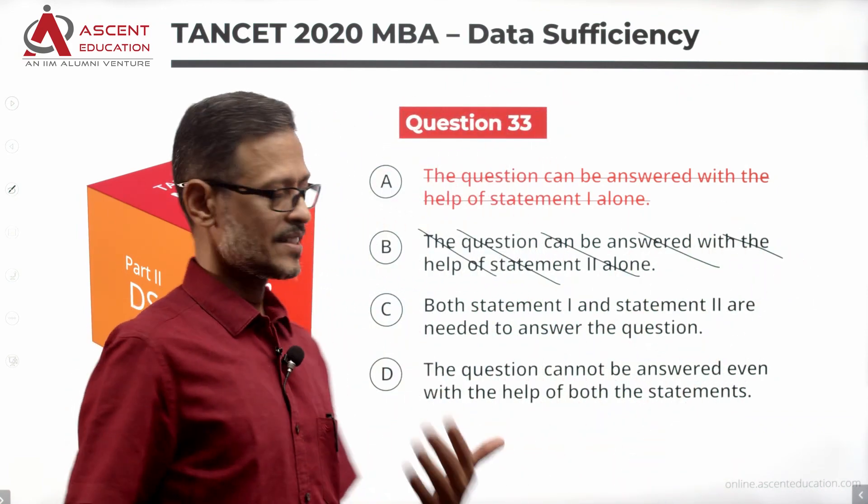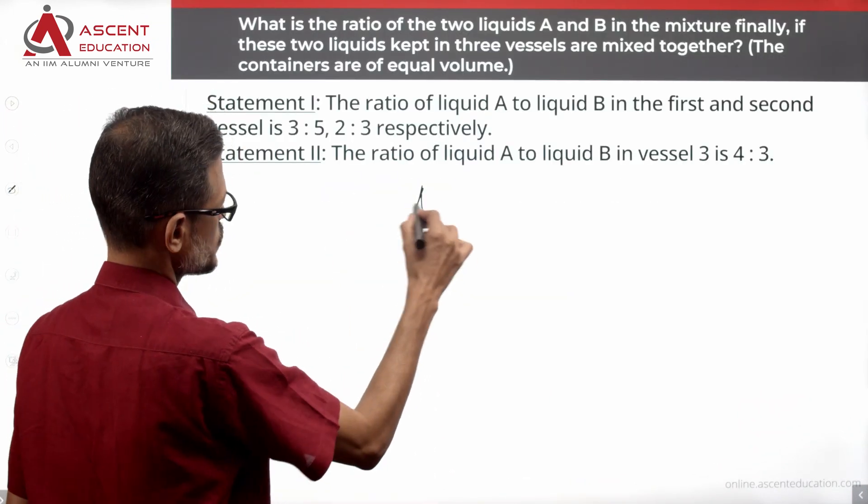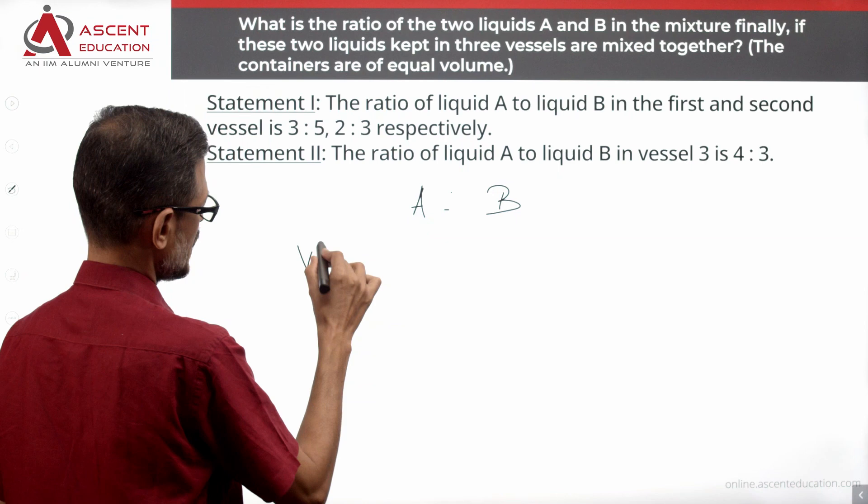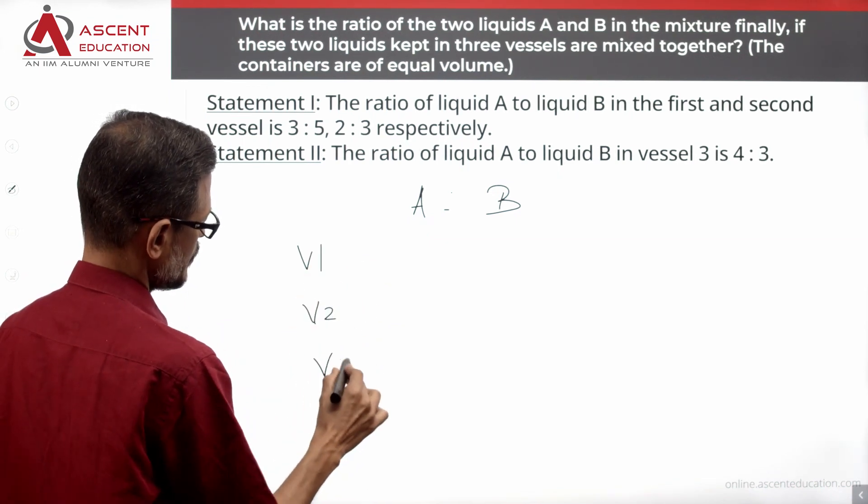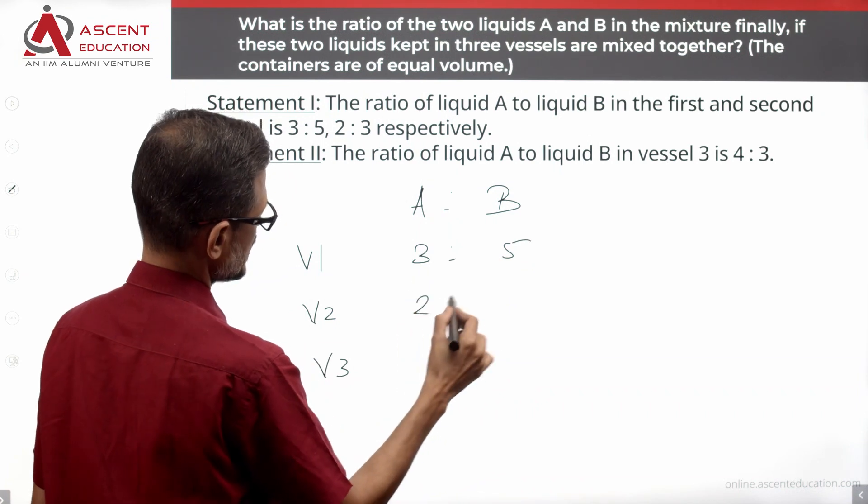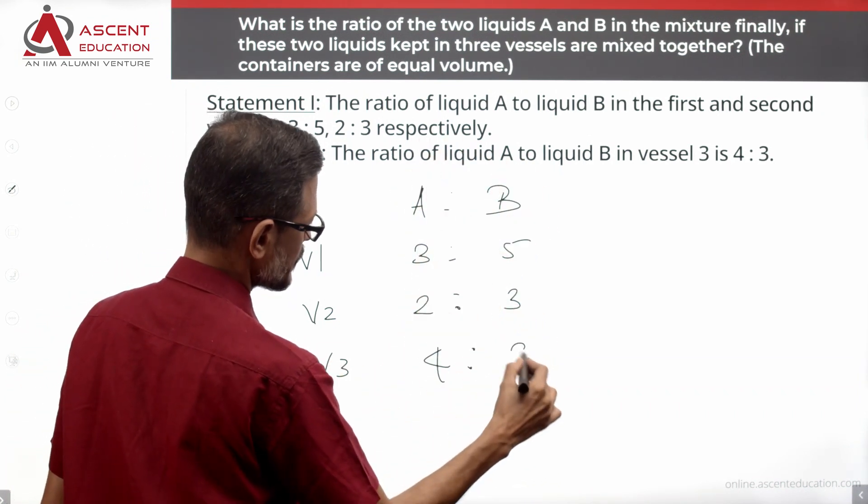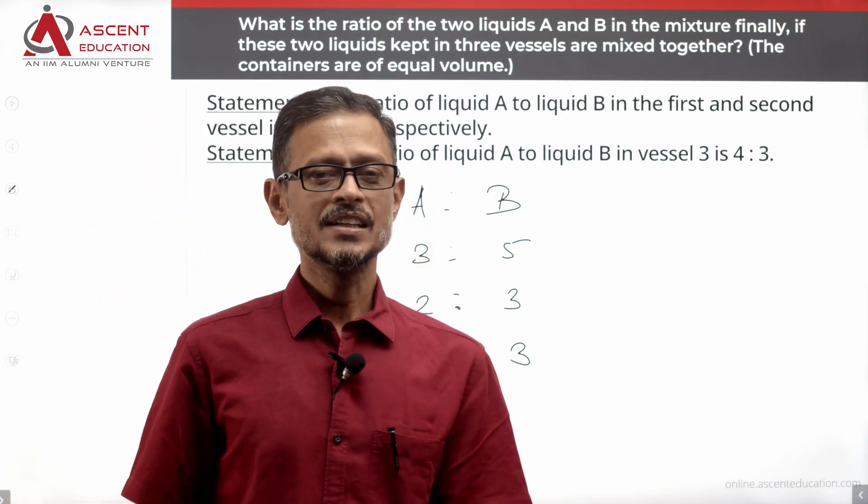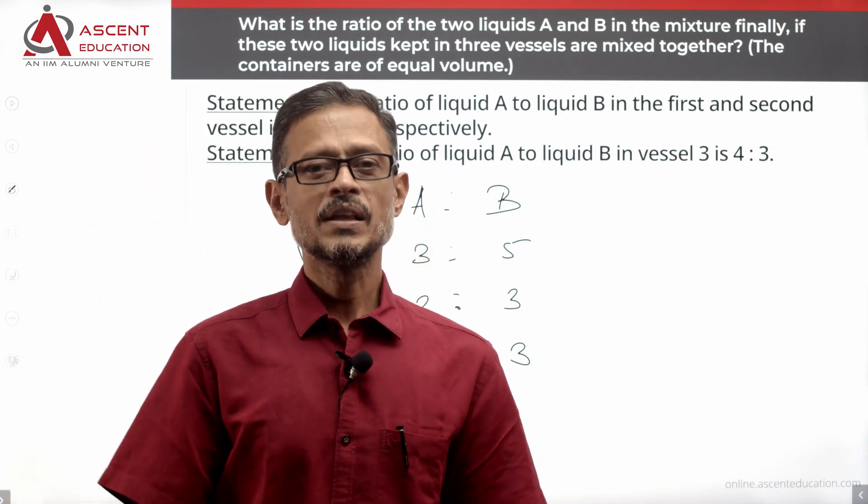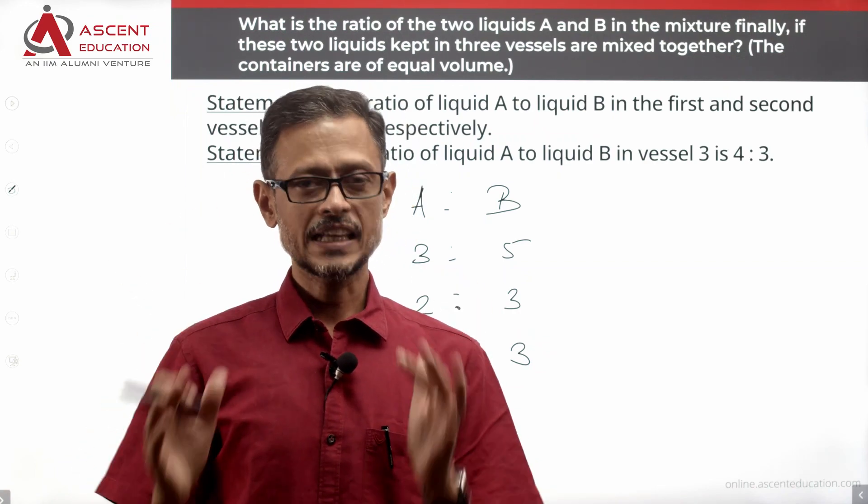Combining them, let us see whether we will get a unique answer. When we combine the two statements, what do we have? We have A is to B, vessels 1, 2, 3. Ratios 3 is to 5, 2 is to 3 from statement 1. From statement 2, 4 is to 3. This combined with the added information that all 3 vessels are of equal volume, we will be able to find out the ratio of A is to B in the final mixture.